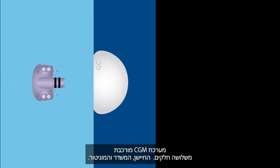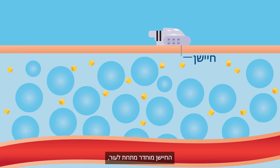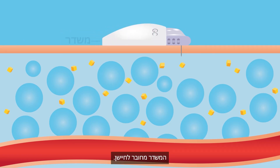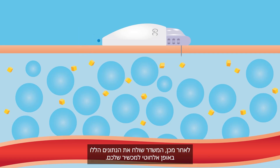The CGM system is made up of three parts: the sensor, a transmitter, and a monitor. The sensor is inserted under the skin so it is in contact with the fluid between your cells, called interstitial fluid. The transmitter is connected to the sensor. The sensor then measures the glucose in the interstitial fluid and sends this information to the transmitter, which then wirelessly sends this data out to your device.